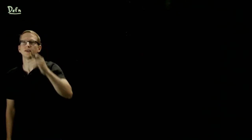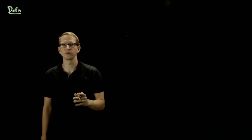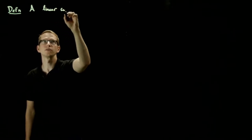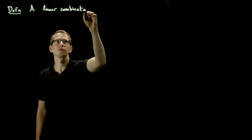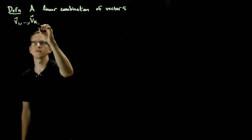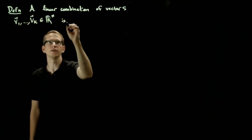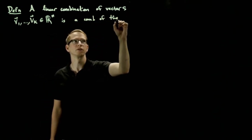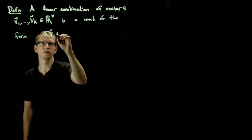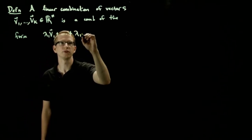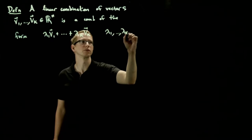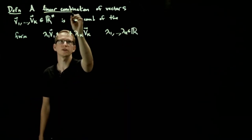So the first definition that we'll need is what an affine combination of vectors is. But to do that, we'll recall what a linear combination is. A linear combination of vectors v1 through vk in Rn is a combination of the form lambda 1 v1 plus lambda 2 v2 and so on. So we add up all our vectors with some weights, and these weights we take to be real numbers. So that's what a linear combination is.